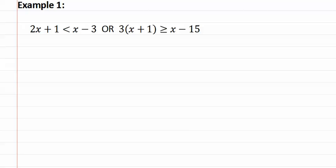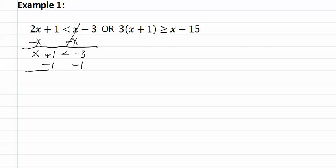Here's example one. Let's begin by solving the first inequality. By subtracting x from both sides, we get x plus one is less than negative three. Subtracting one from both sides gives us x is less than negative four. This is an 'or' statement. Now for the second inequality, we need to distribute before we can go on.